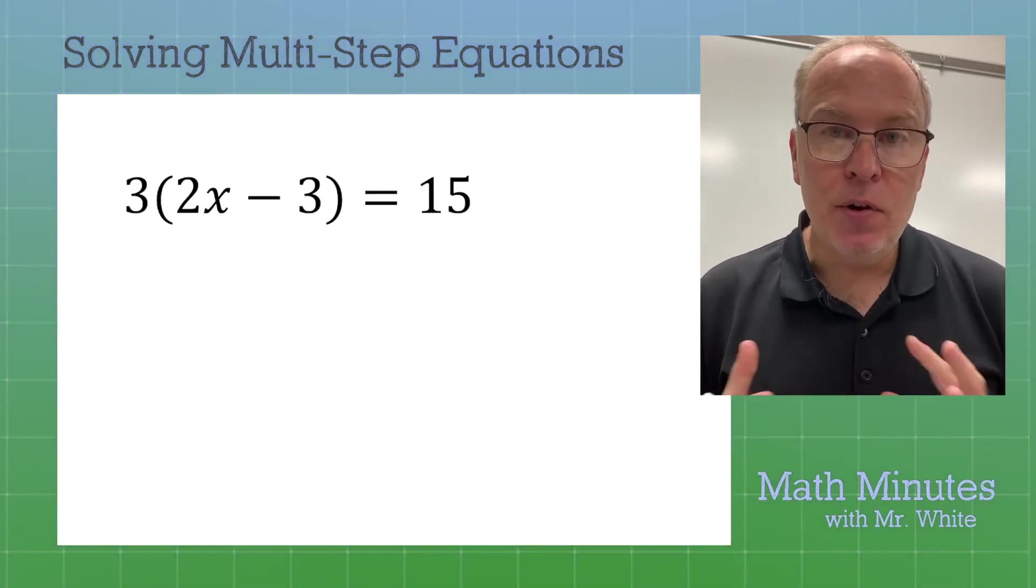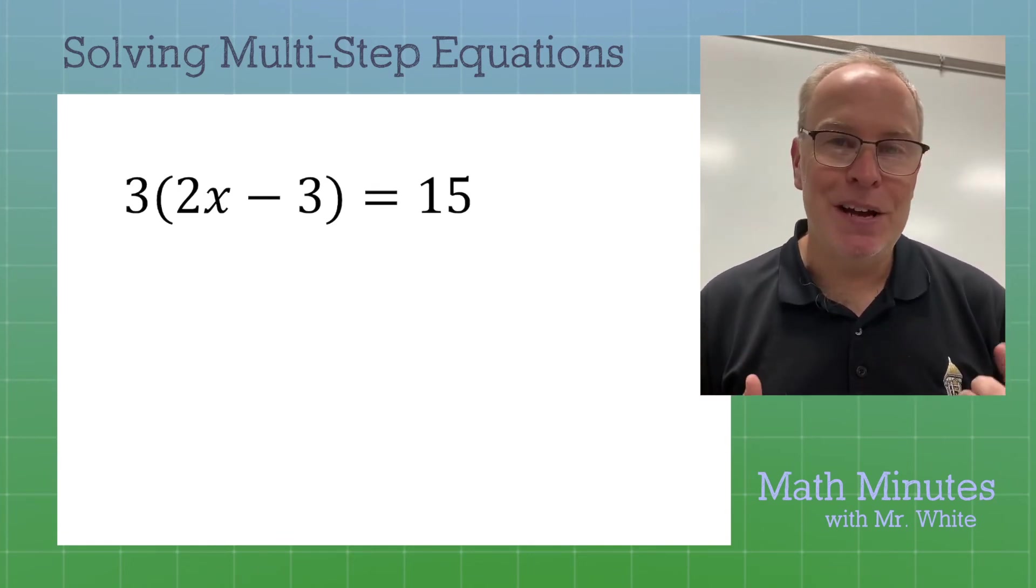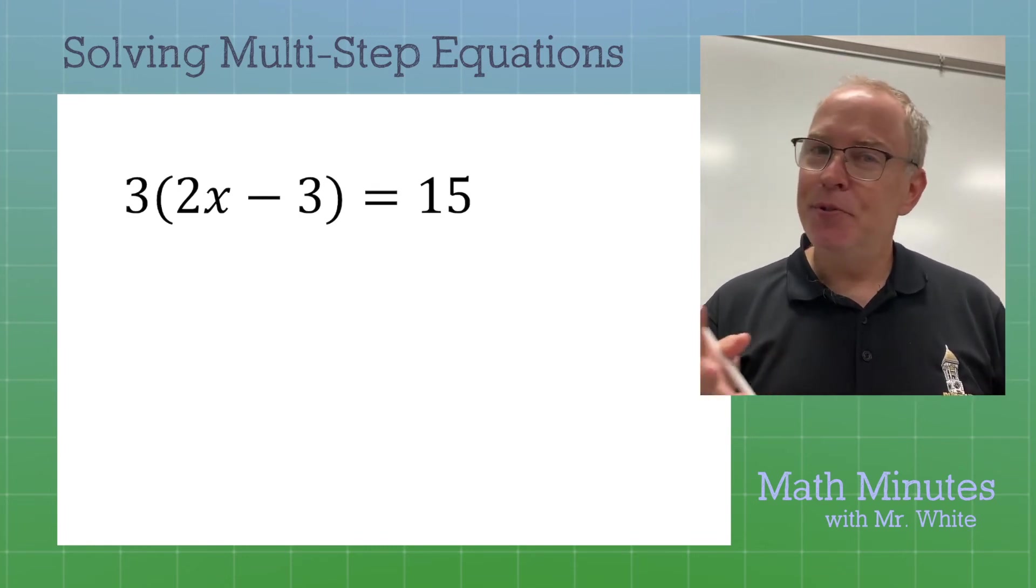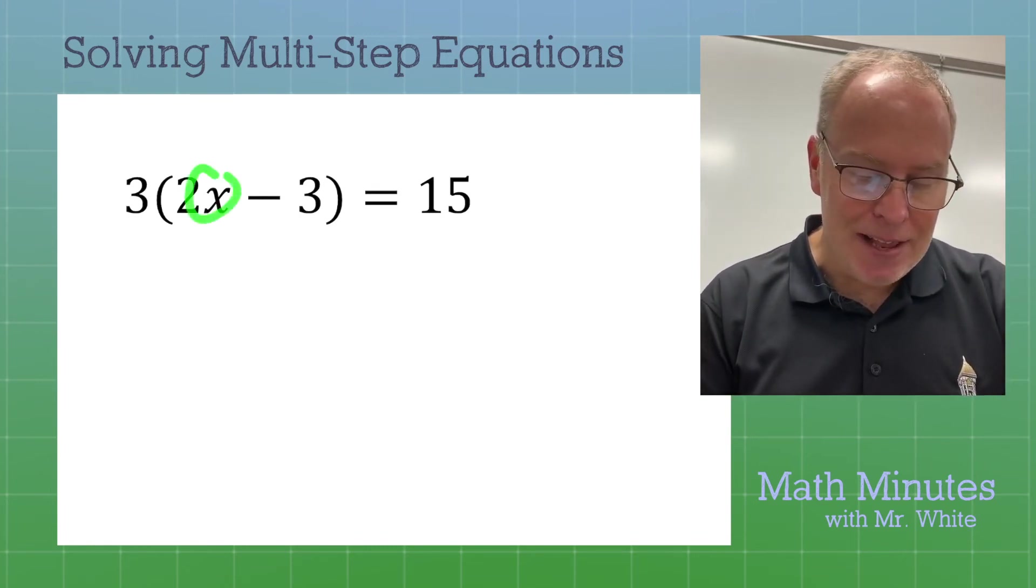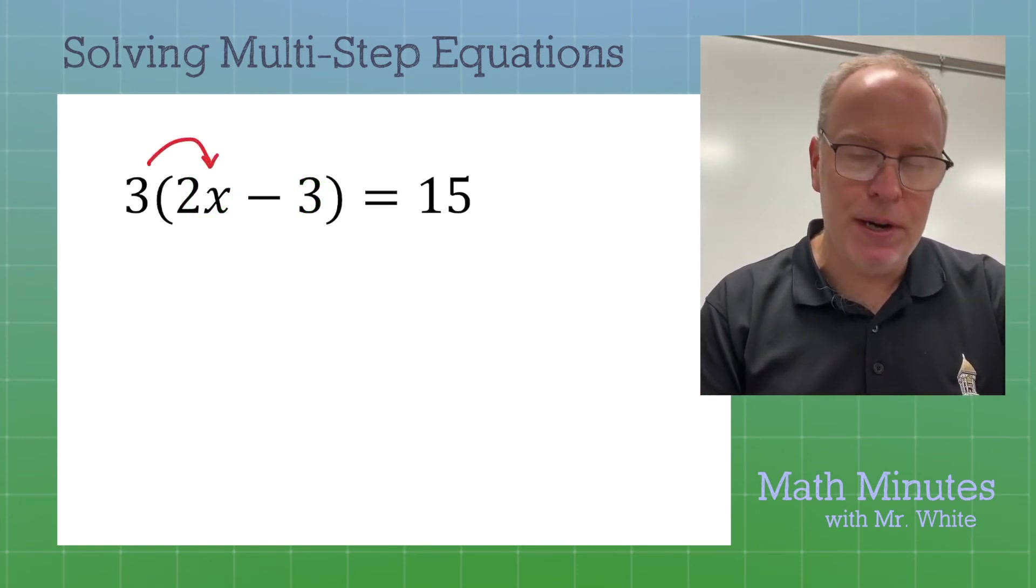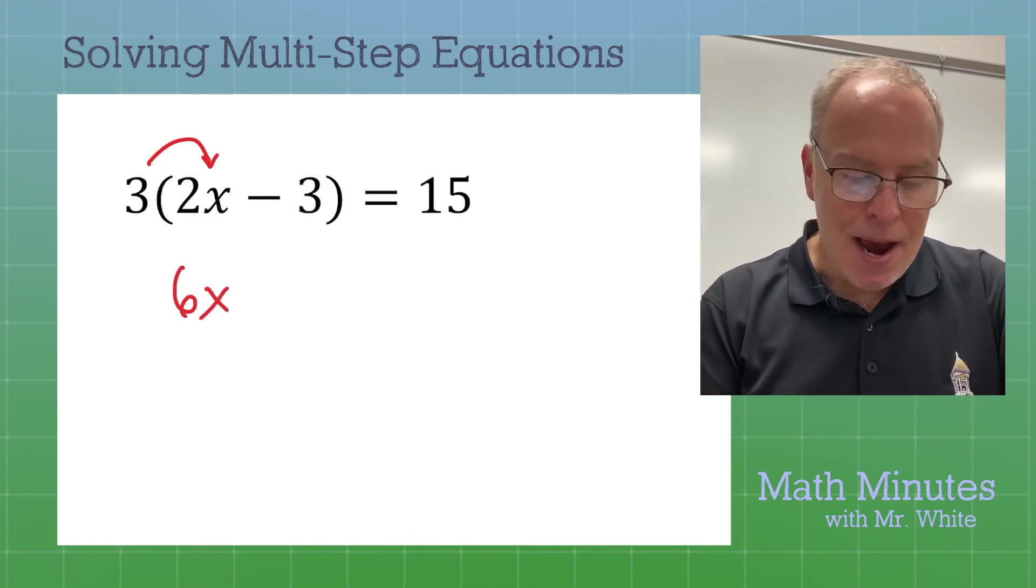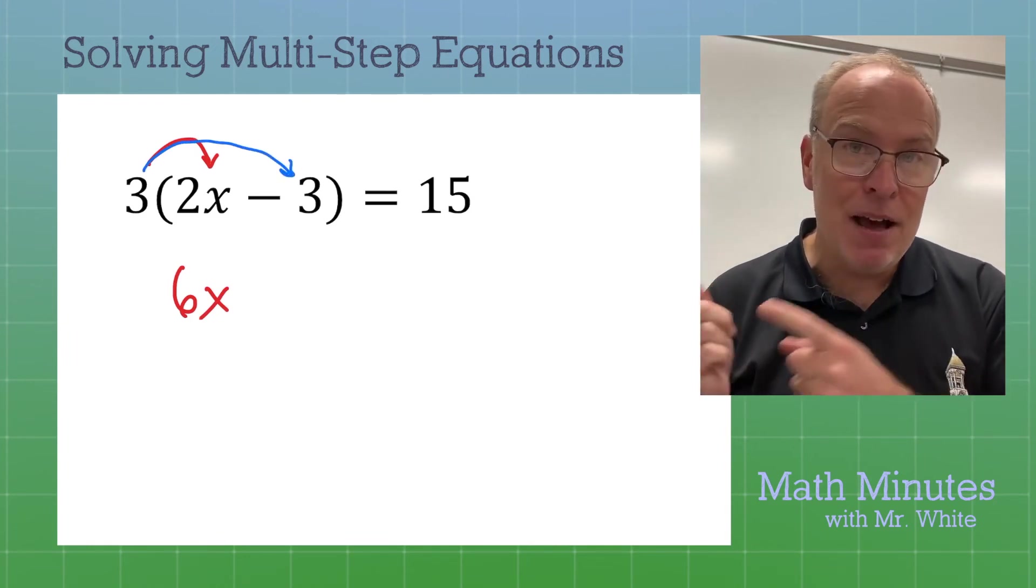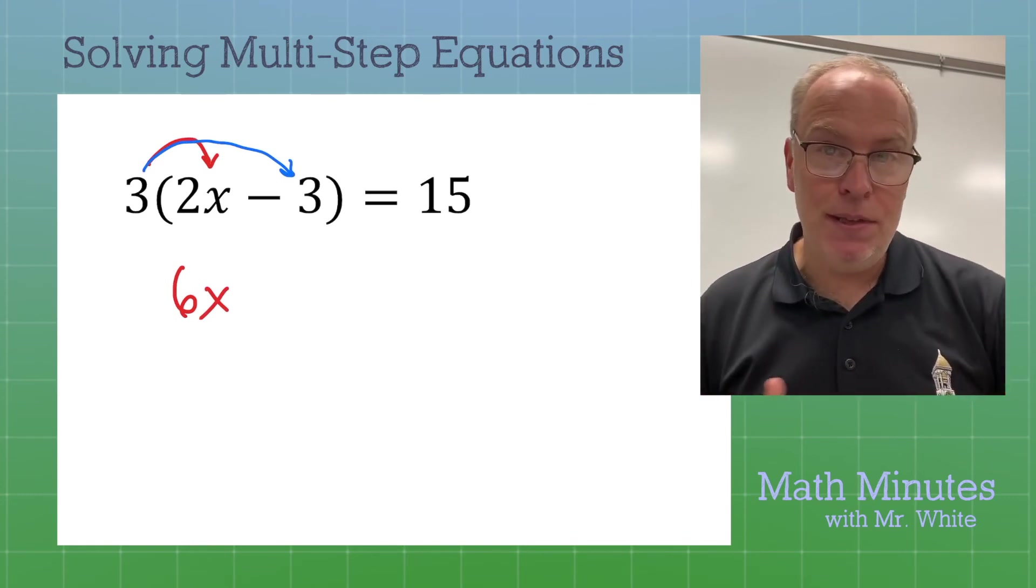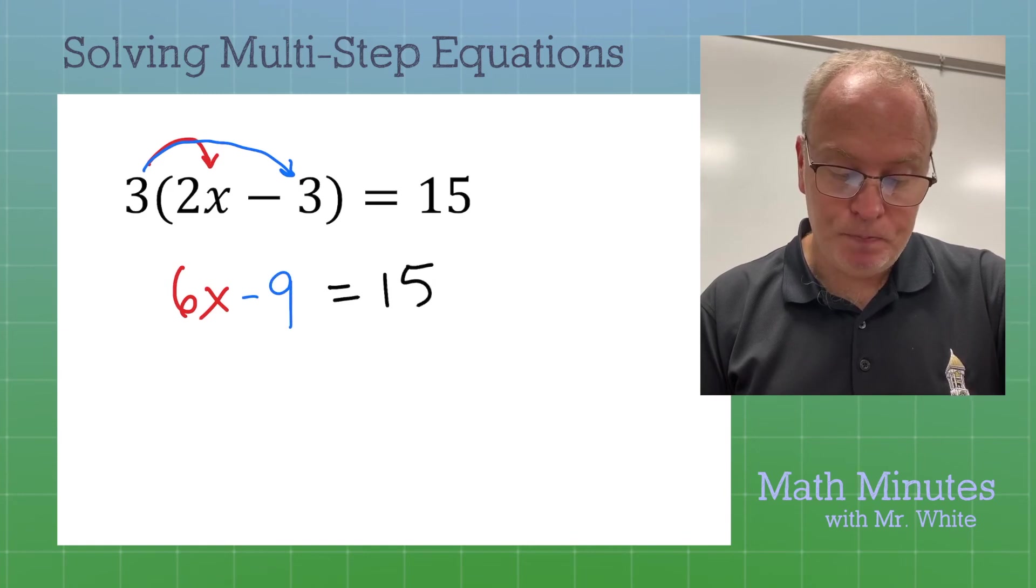Here we have another equation with some parentheses. So, what do we do first? Well, some students try to tell me, we do what's inside the parentheses, Mr. White. Well, there's nothing we could do in there. These are not like terms. So, how do we get rid of that parentheses? It's called the distributive property. The distributive property. We're going to multiply 3 onto that 2x. That gives us 6x. That's part 1. And then the second part of the distributive property is where you multiply the positive 3 that's on the outside times the negative 3 that's on the inside. We get negative 9 equals 15.